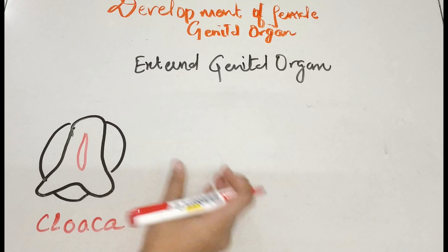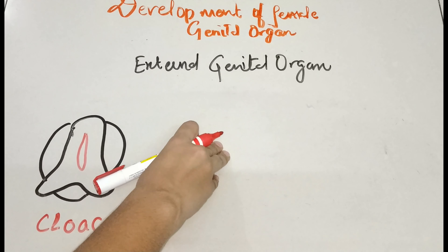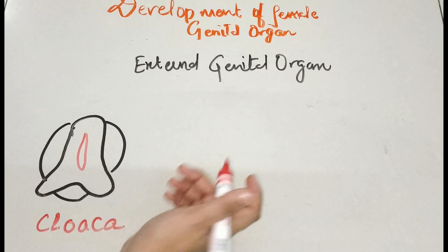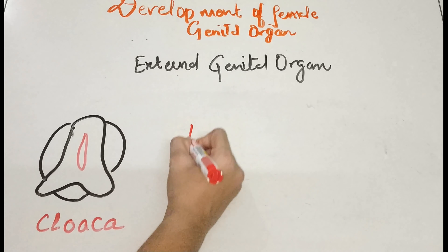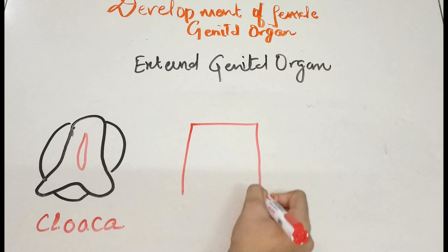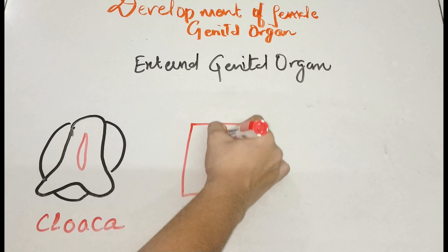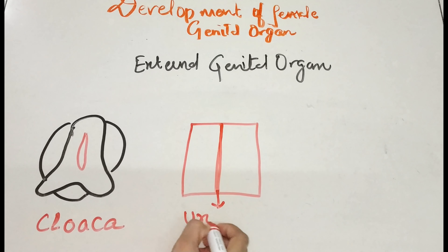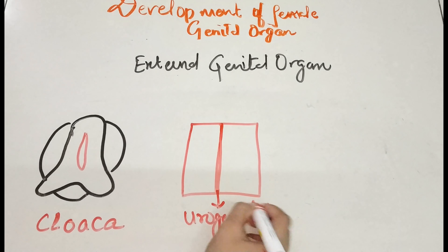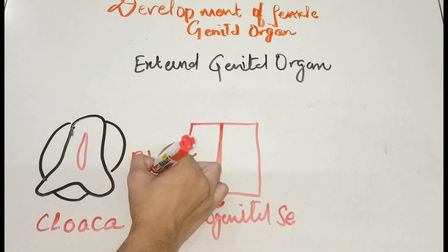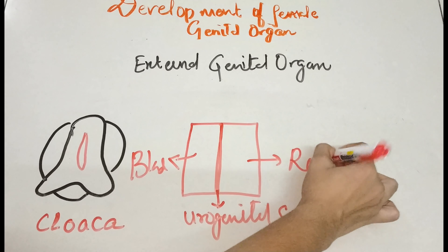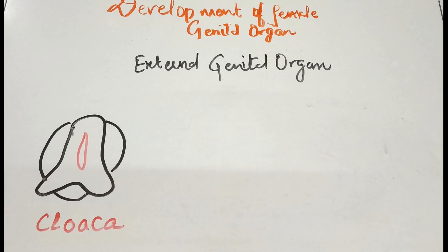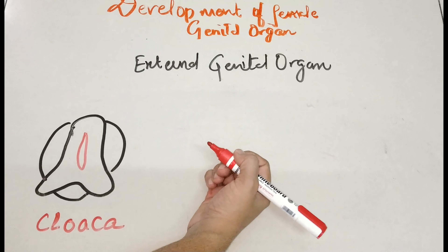When embryological development occurs, when the fetus reaches the 10th week, it will start differentiating into a sex. When this slit is further divided — here is the cloaca — in between we have the urogenital sinus, the bladder area, and the rectum area.